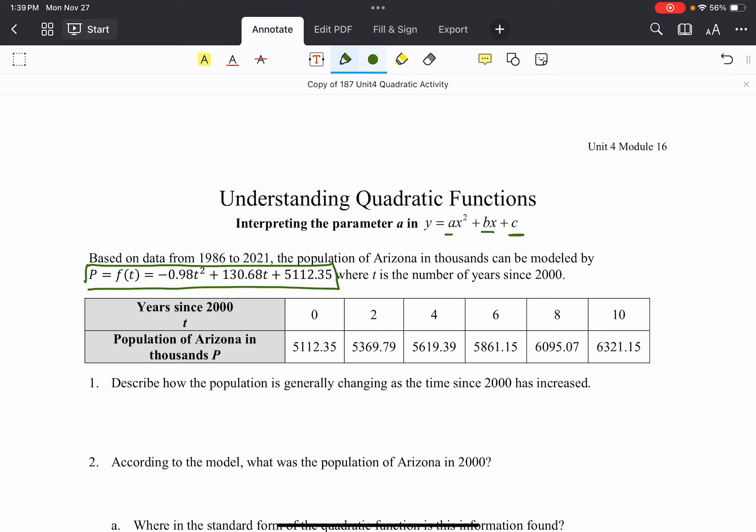And so question one is just, you know, generally how is the population changing. And if we take a quick look here I'll notice I start at 5,112,000 and then it goes up to 5,369,000. And so each of these numbers is getting bigger, and so generally the population is increasing. My graph is going up.